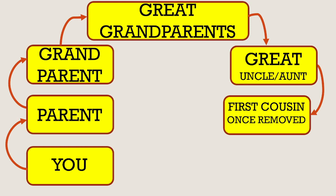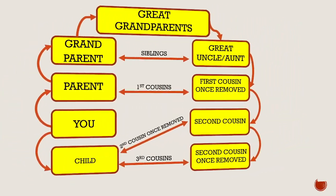What makes you a removed cousin? How does the word 'removed' come into this? It's simple really. You are removed because your ancestors are not the same generation. So your shared ancestors with your first cousin once removed are your great-grandparents, but for your first cousin once removed, those same people are only their grandparents.